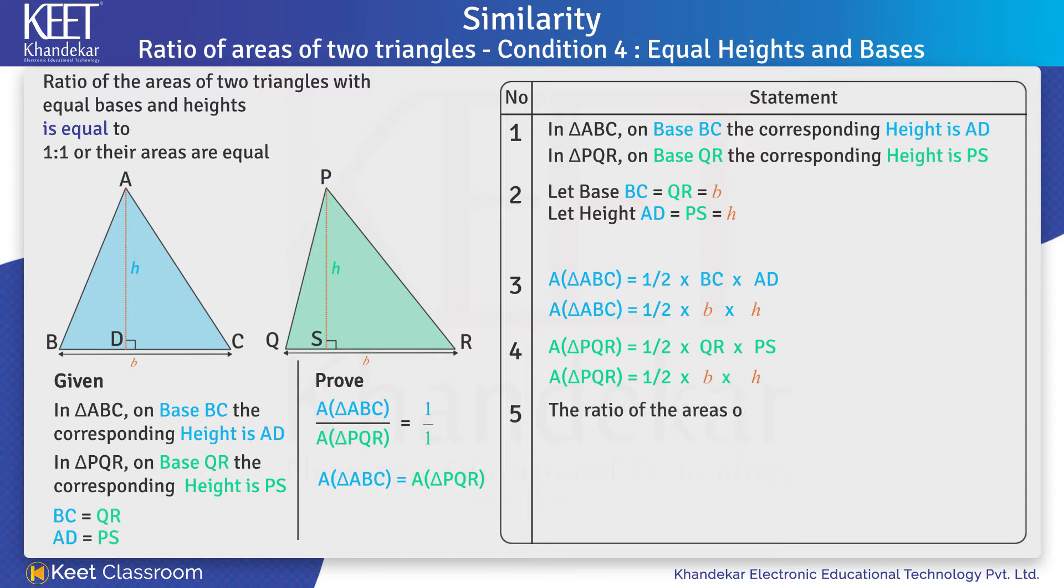Now, the ratio of the areas of the two triangles is: Area of triangle ABC upon area of triangle PQR is equal to half into B into H upon half into B into H. On canceling half, B and H, we get area of triangle ABC upon area of triangle PQR is equal to 1 upon 1.